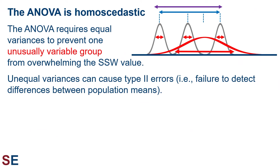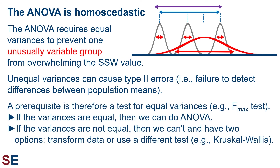The first thing to be aware of is that the ANOVA is a homoscedastic test — it requires equal variances to prevent one unusually variable group from overwhelming the SSW value. For example, the gigantic variance of one group would overwhelm the SSW term and render our F-test non-significant even though there's an obvious difference between the smallest and largest groups. Unequal variances can therefore cause type 2 errors — the failure to detect genuine differences between population means. A prerequisite for the ANOVA is therefore a test for equal variances such as the FMAX test. If variances are not equal, we must either transform the data or use a less powerful alternative test like the Kruskal-Wallis test.